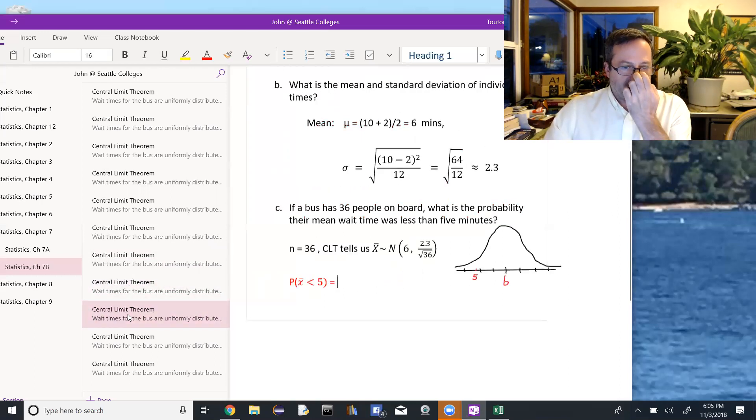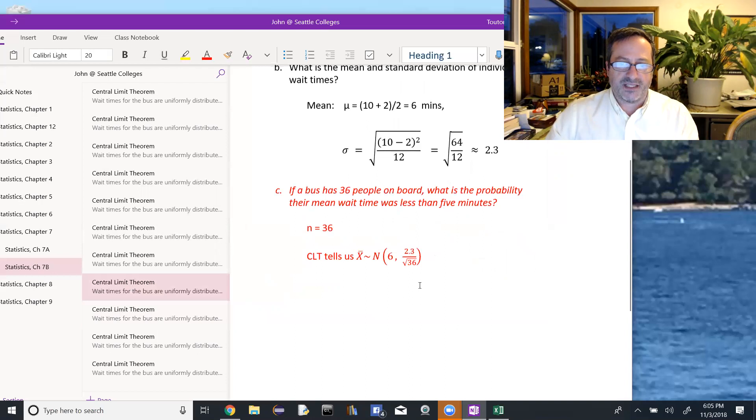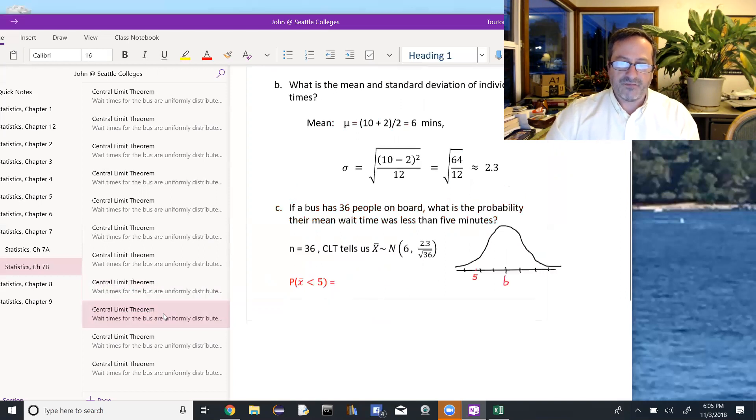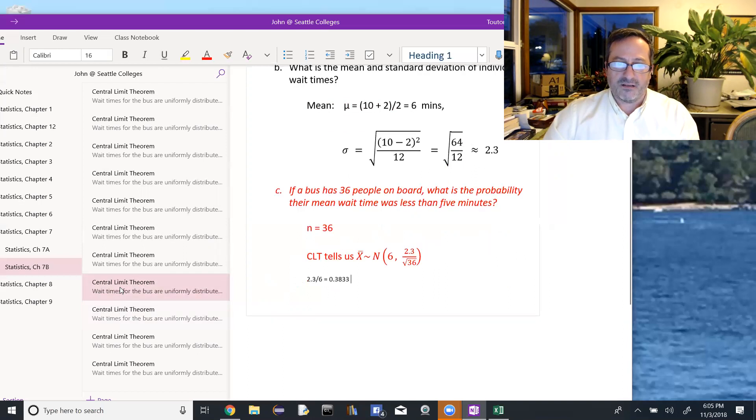So when we set up our picture, it's helpful to know about how big 2.3 divided by the square root of 36 is. So 2.3 divided by 6, that's about 0.4, 0.38. So in my picture, 6 is in the middle. This is a normal curve I've drawn. 6 is my mean, and each tick mark represents 0.38, or about 0.4.